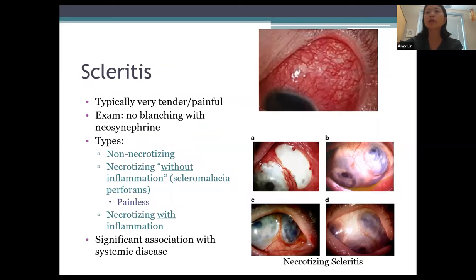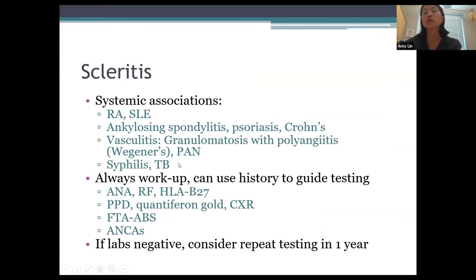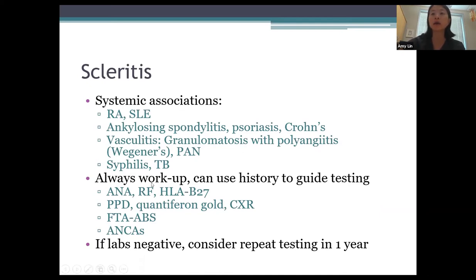Scleritis is typically very tender, very painful, and very red, with no blanching with phenylephrine. There are three types: non-necrotizing (most common), necrotizing without inflammation (scleromalacia perforans), and necrotizing with inflammation. Scleritis has a very significant association with systemic disease — rheumatoid arthritis, lupus, ankylosing spondylitis, psoriasis, Crohn's, vasculitis, syphilis, and TB. Unlike episcleritis, you always want to work up scleritis, using history and review of systems to guide testing.